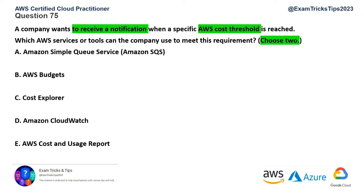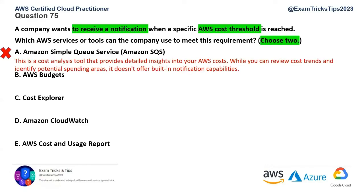Option A, Amazon Simple Queue Service - this service can be used in a solution for sending notifications, but SQS itself will not send notifications. It is mainly used for decoupling applications where one service communicates with another via a queue, but you need another service to actually send messages. So this is incorrect. Fun fact: Amazon SQS was the first service launched by AWS when it launched back in November 2004. But it's the wrong answer for this question.